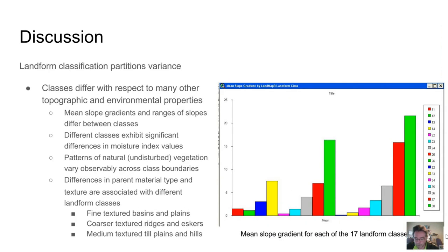We have done some preliminary visual and quantitative review of the landform classes, and we can report that they appear to delineate meaningful variations with respect to several topographic and environmental attributes. For example, mean slope gradient differs between classes. Also differing between classes are patterns and density of vegetation, and differences in moisture class as inferred from DEM moisture indices. And finally, we've also noted differences in parent material types and texture within the different landform classes.